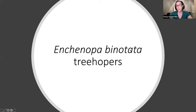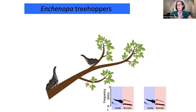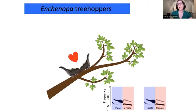I work with Enchenopa binatata treehoppers — a really common insect throughout North America that I knew nothing about until after my PhD, but now I see them everywhere. They're about a half centimeter long. They have a duetting system where males call and females call back if they like what they hear — males go 'ooh' and females go 'mmm' if they like him. Females choose males based on how males sing. The male walks along plant stems, sings, listens for female responses, searches for her, and if he finds her, it ends in mating.